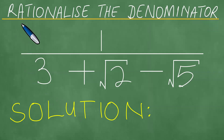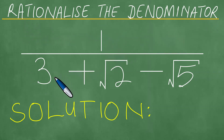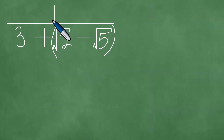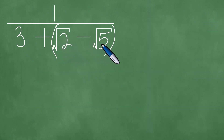We need to proceed to rationalize the denominator, given 1 over 3 plus the square root of 2 minus the square root of 5. We present a solution to this problem in a step-by-step fashion. Given 1 over 3 plus the square root of 2 minus the square root of 5 in parenthesis.